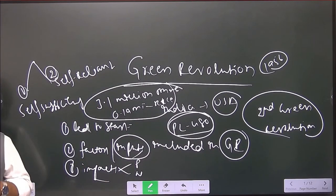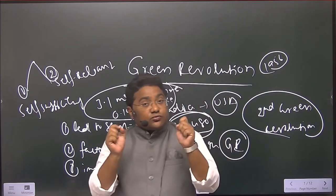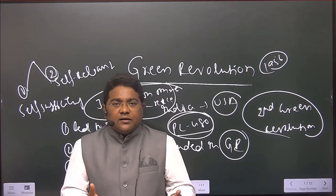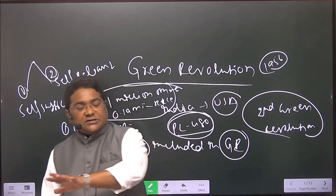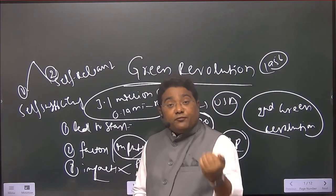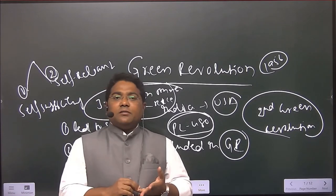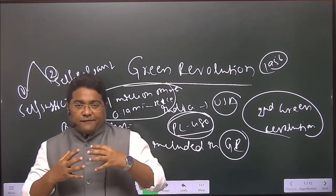The green revolution means making the land area green by growing crops, to achieve food security of the country. It is not confined to only a particular country or part of the country. At the initial stage — like a pilot project — it was tried in certain pockets like Punjab, Haryana, Uttar Pradesh, and in the south like East Godavari, West Godavari, and the Cauvery Delta region in Tamil Nadu. It was very successful.